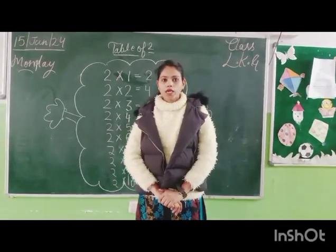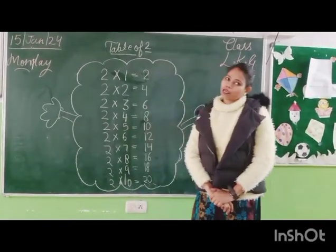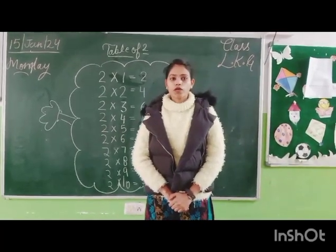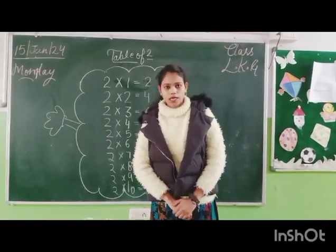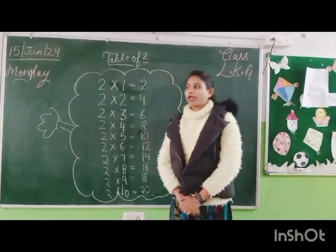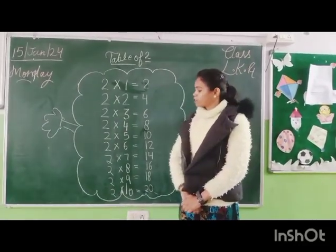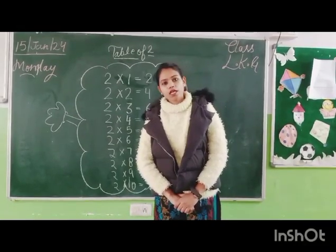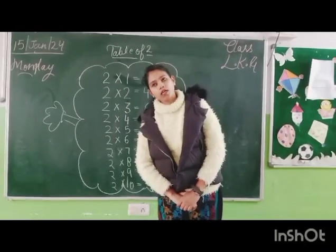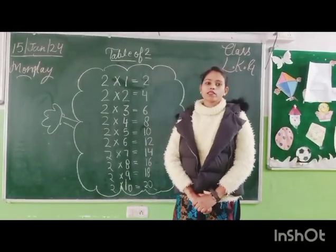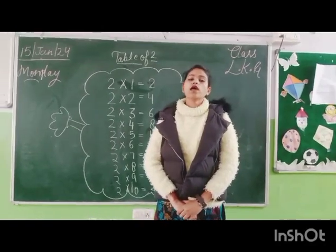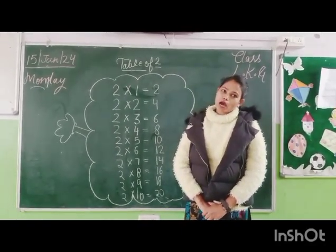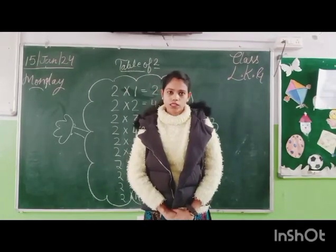Let's read this table again. Two ones are two, two twos are four, two threes are six, two fours are eight, two fives are ten, two sixes are twelve, two sevens are fourteen, two eights are sixteen, two nines are eighteen, two tens are twenty. Now you have to learn this table.